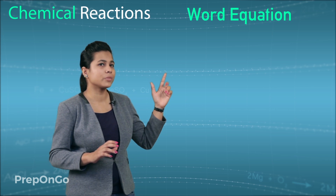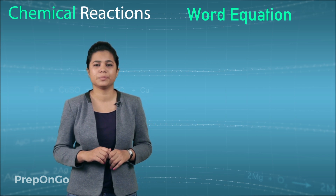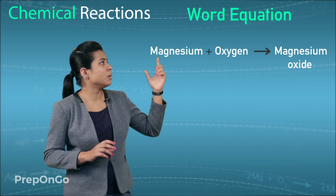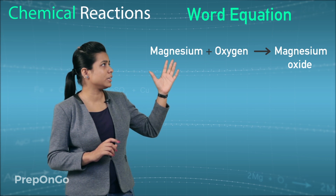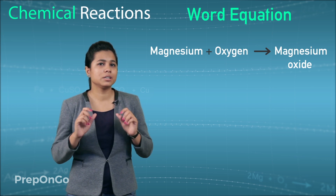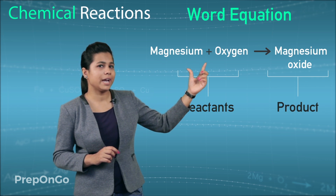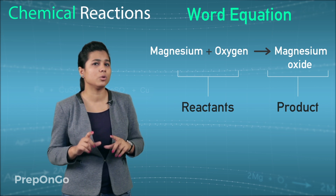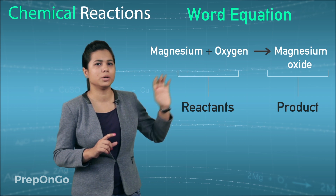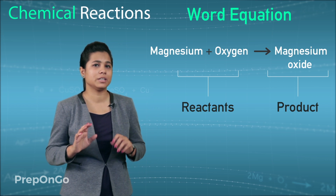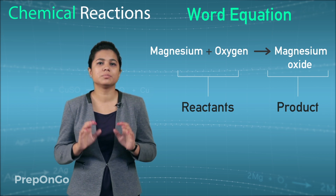The first form is the word form. Here we have performed the activity of magnesium burning with oxygen to give magnesium oxide, so we simply write: magnesium plus oxygen gives magnesium oxide. A word equation consists of the reactants with a plus sign on the left hand side and the products on the right hand side. The arrow points towards the product, showing the reaction goes from reactant to product. We read it as: magnesium reacting with oxygen to give magnesium oxide.